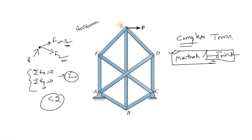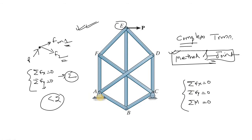This is the externally applied load P at joint E. By using the equilibrium equations — summation of Fx equals zero, summation of Fy equals zero, and summation of moments about any point equals zero — you can find out the reactions. This is one vertical reaction, let's say Va. This is the horizontal reaction, let's say Ha. This is a roller, so only a vertical reaction. By using these equilibrium equations, you can find all the vertical and horizontal reactions acting in this truss.